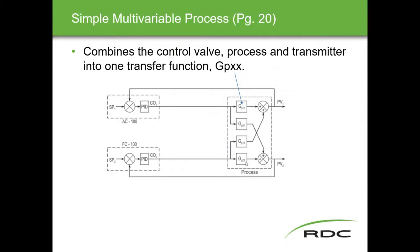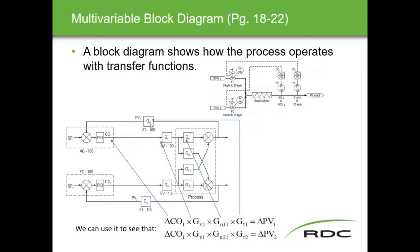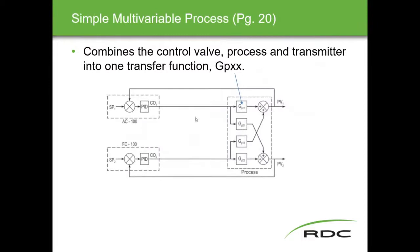We take this big block of stuff and simplify it down to GP. The variables change — GT for transmitter, GB for valve, GN representing the process — and we simplify the block diagram. Now we have GP representing the entire process: the transmitter, the valve, the dynamics of the process all together in this simpler block diagram. GP11 is controller one/PV1, and controller one/PV2.